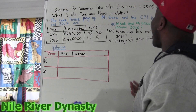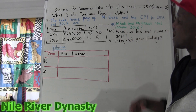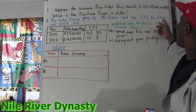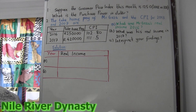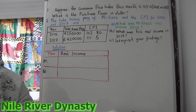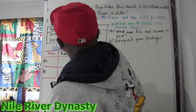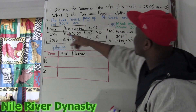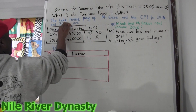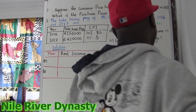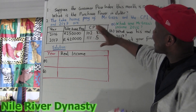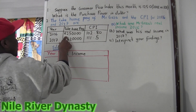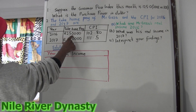So now suppose the consumer price index — let me start with the second one. They take the take-home pay of Mr. Gaza, and the CPI for — I made a mistake — it must be 2016 and 2017. So this should be 2016 and 2017 according to the question. The CPI for 2016 and 2017 is as follows. In 2016, his take-home pay is 250,000.